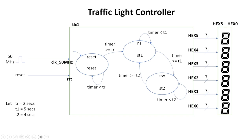In reality, for an actual traffic light controller you'd send signals to drivers for the lights. But here we're just going to display what state we are in — reset, ST1, or ST2. When we display reset, note there are six seven-segment displays; hex0 will be blank. For ST1 and ST2, I'm going to display them on hex4, hex3, hex2, keeping hex5, hex1, and hex0 blank.